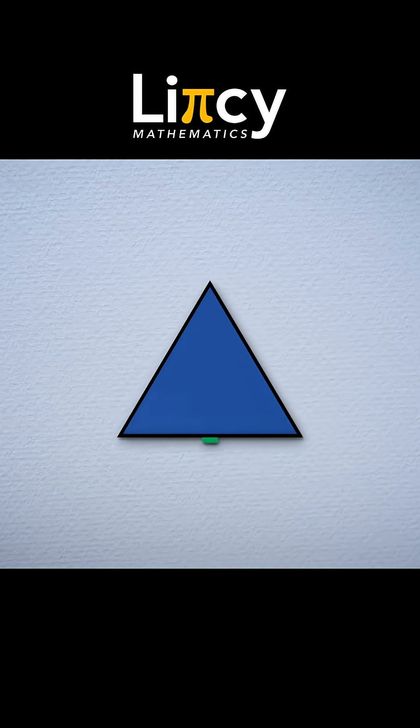We can pick any side of the triangle and call that the base. We can then measure straight up in a perpendicular line to the third point and call that distance the height.